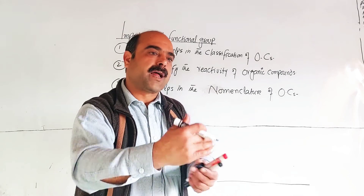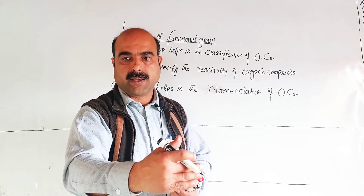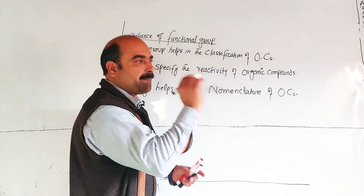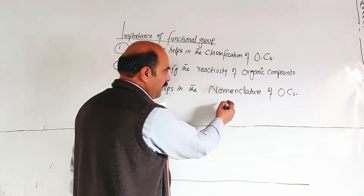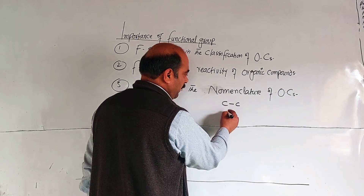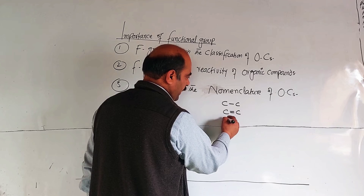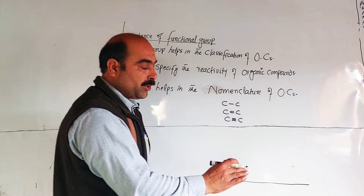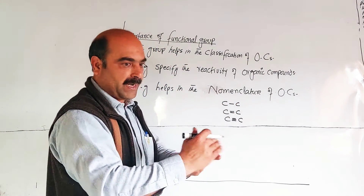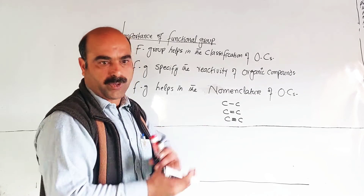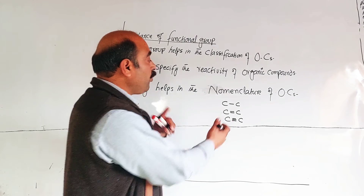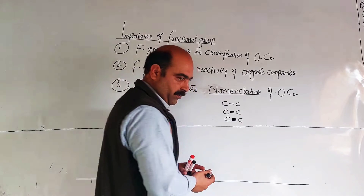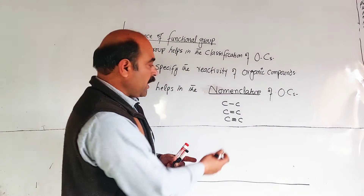We will discuss this further later on, but to give a simple example: carbon-to-carbon single bond, double bond, and triple bond are important functional features. Normal nomenclature based on these bonds will be discussed later on.